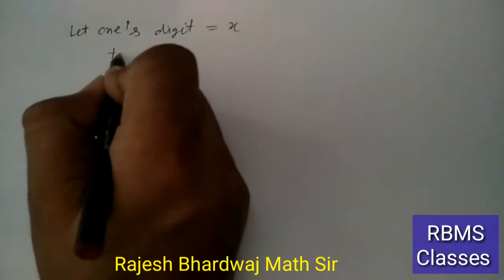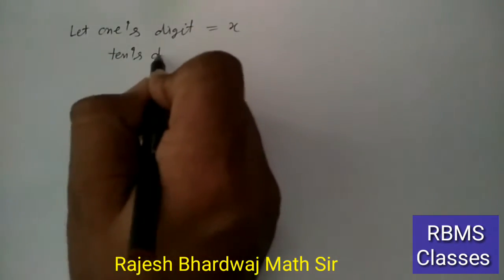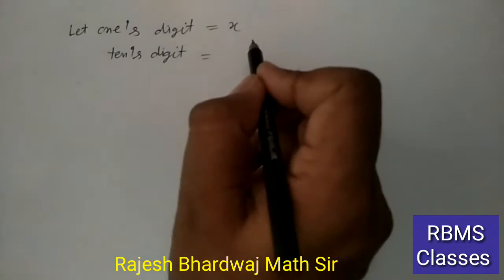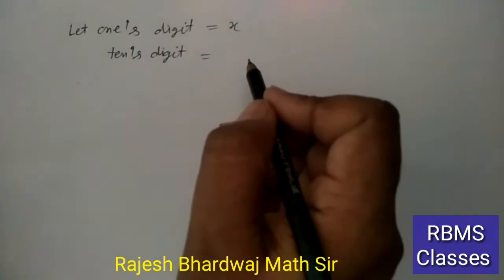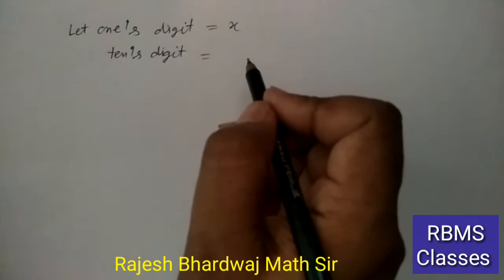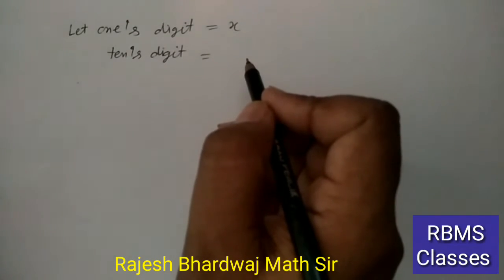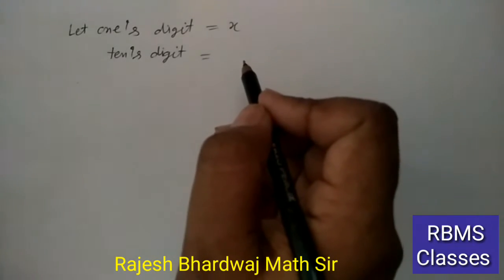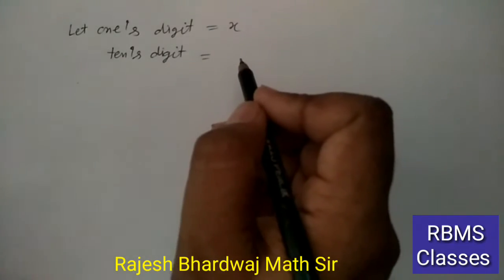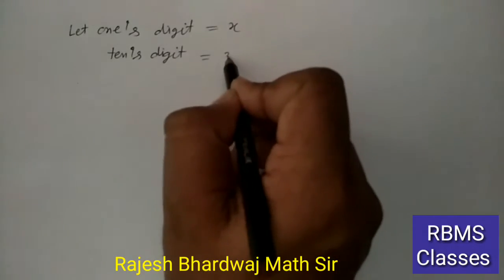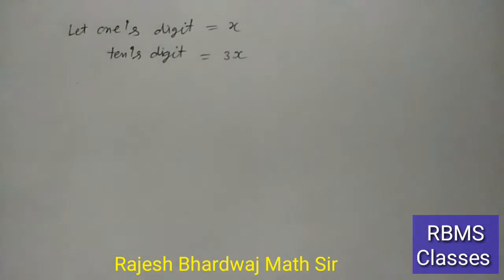ठीक है बच्चों? तो यहां पर tens digit क्या आएगा? Tens digit is equal to — देखो यहां पर इन्होंने कहा था: one of the two digits is three times the other digit. तो हमने ones digit x माना है तो tens digit three times होगा, यानी 3x हो जाएगा।